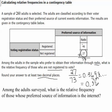This is the same thing as 37%, so 37% of the people that chose radio are not registered voters. When we're dealing with relative frequency, we want to leave it as the decimal.